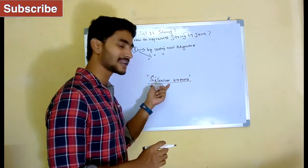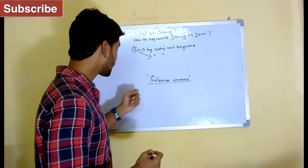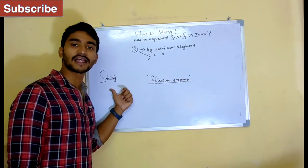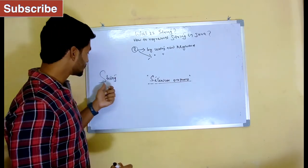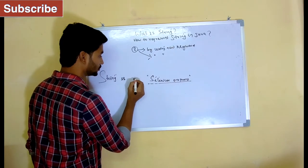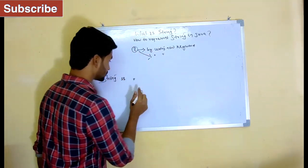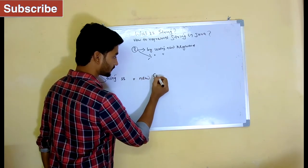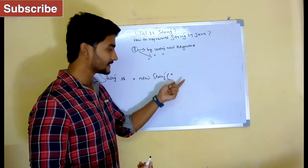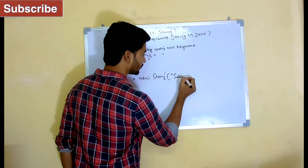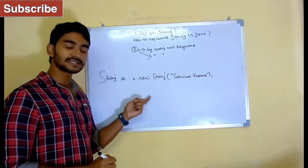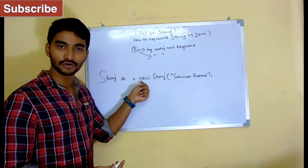Let's first try to represent the string 'Selenium Express' by using the new keyword. First I need to create an object, so I write the class name String — there is a class called String inside the java.lang package. Then I give a reference variable: String s1 = new String("Selenium Express"). This is how I can create a String object by using the new keyword in Java.